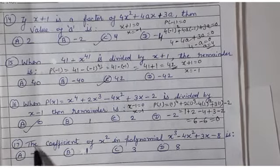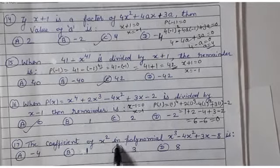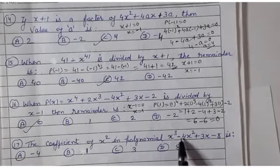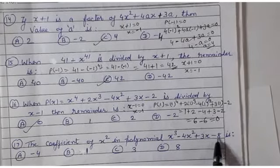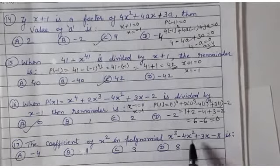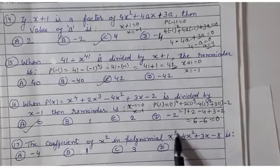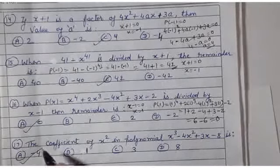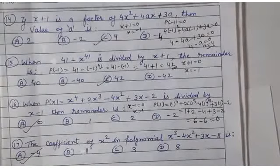Question number 17: the coefficient of x² in the polynomial x³ − 4x² + 3x − 8 is −4.